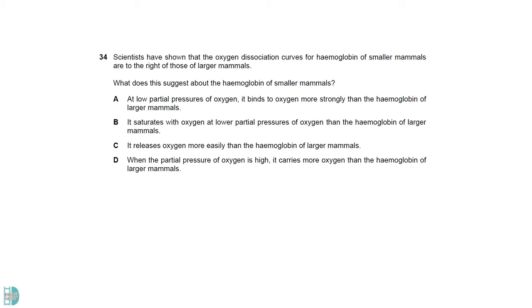The oxygen dissociation curve at the right indicates a low affinity. It means that hemoglobin releases oxygen more easily. A, B and D are all descriptions for a higher affinity.